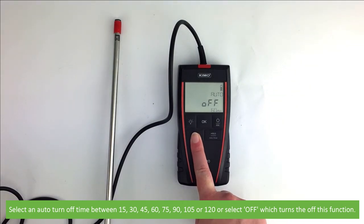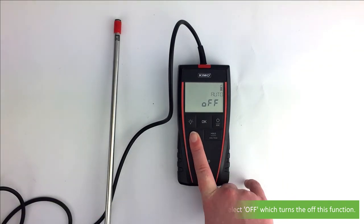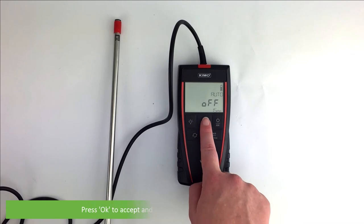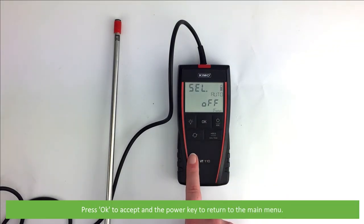45, 60, 75, 90, 105, 120, or select off, which turns off this function. Press OK to accept and the power key to return to the main menu.